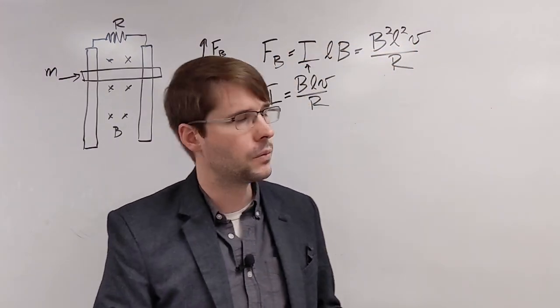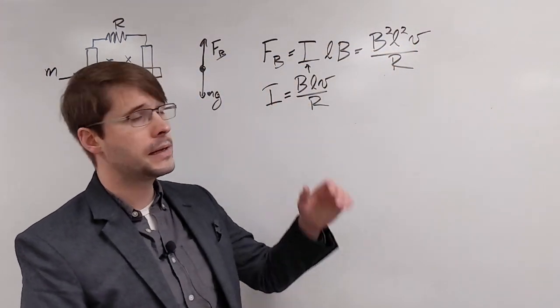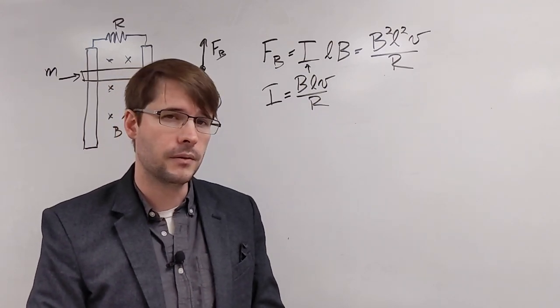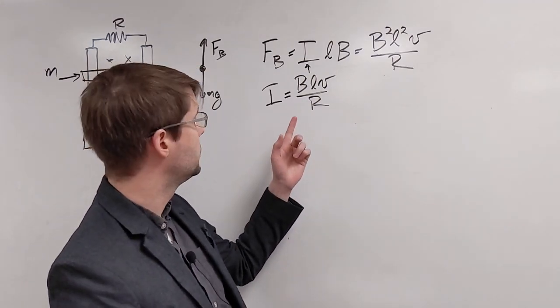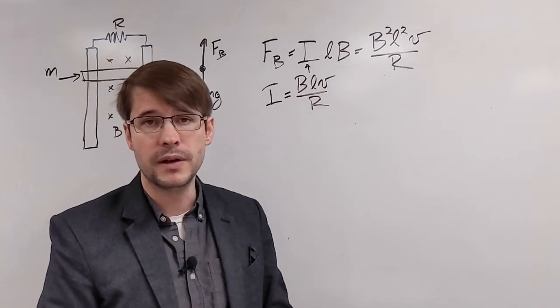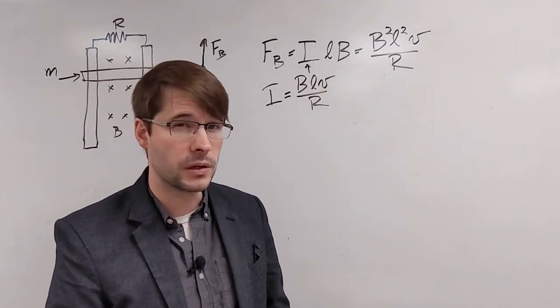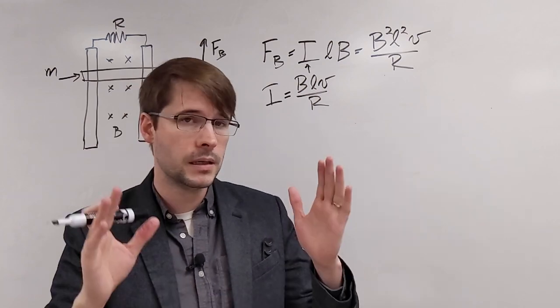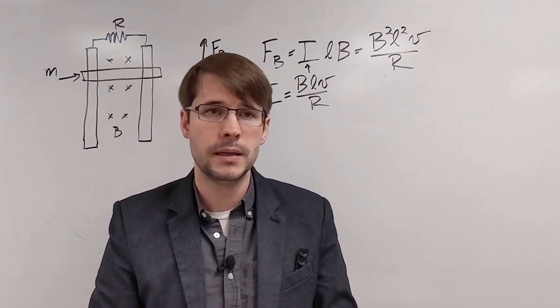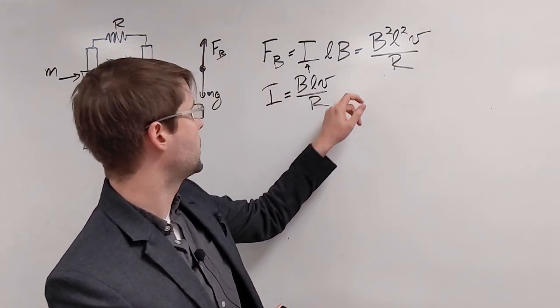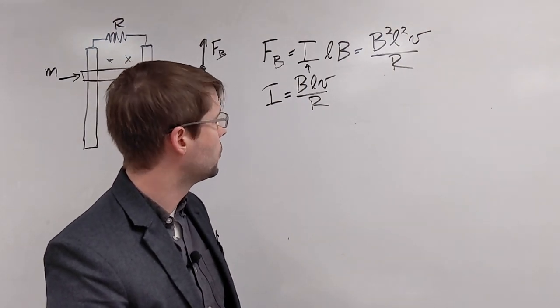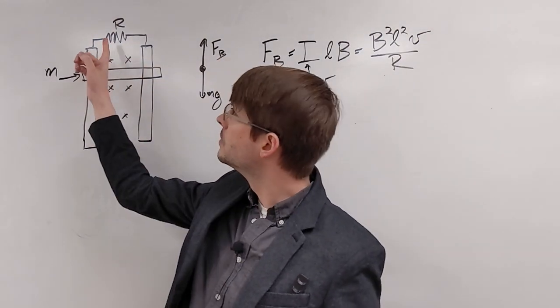All right. So here are the equations we get combining the two equations that we know: the force on a wire with the BLV, which was our value for the motional EMF, the magnetic field times the length of the rod or the width of the rod that's in the magnetic field times the velocity over the resistance in the loop, which we're given here.